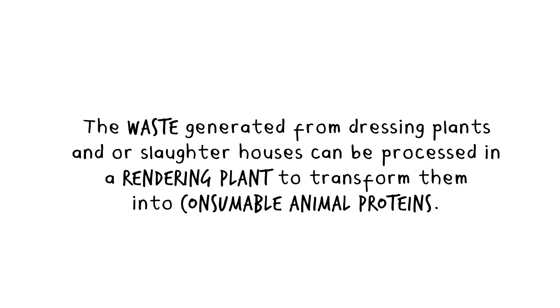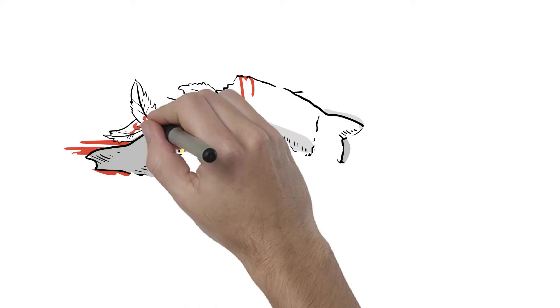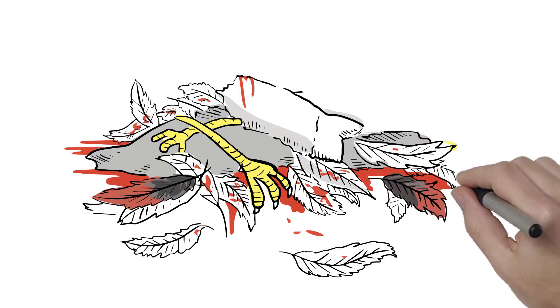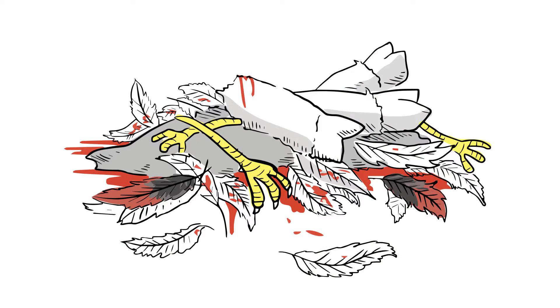It is the process of transforming animal waste into consumable animal proteins. The waste can be feathers, blood, mortality, entrails, and any other part of the chicken or hog that is not consumed by humans.